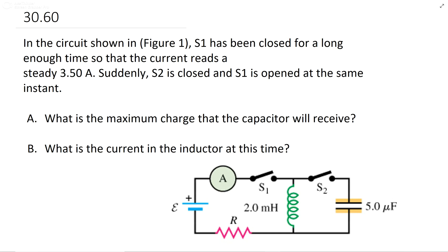Okay, this is problem 30.6. You have this circuit with a current of 3.5 amperes.